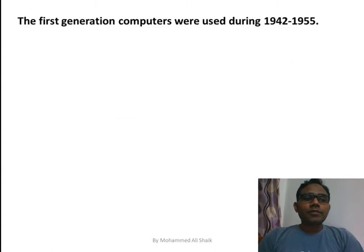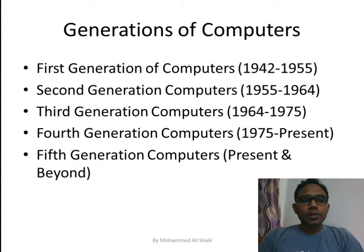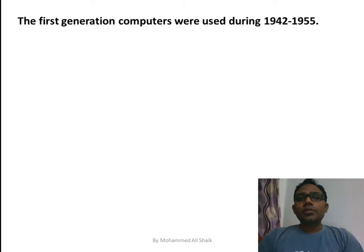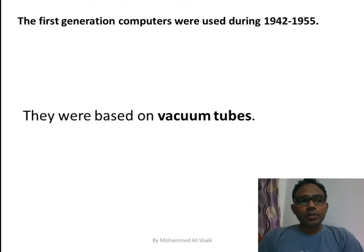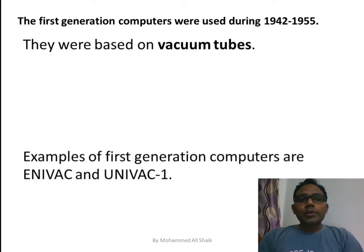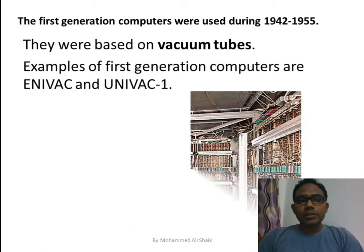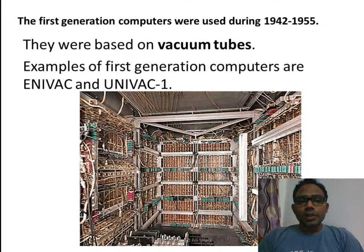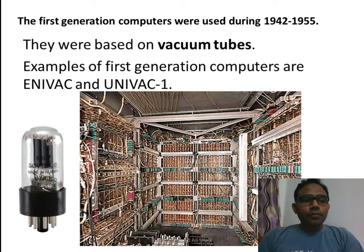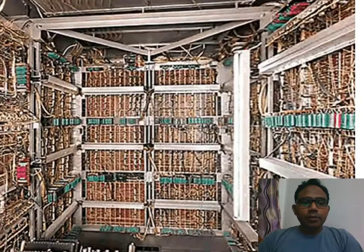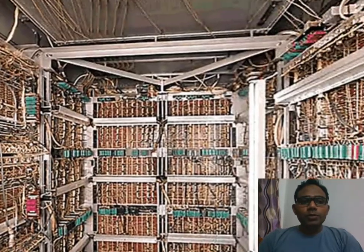There are totally five generations of computers. The first generation computers were from 1942 to 1955, based on vacuum tubes. The names of the first generation computers were ENIVAC and UNIVAC. This whole building was made up of vacuum tubes.